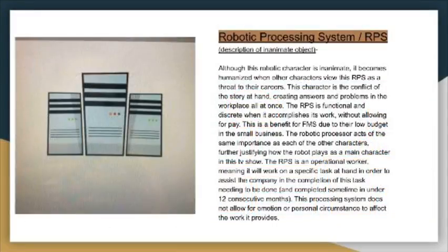Although the robotic processing system is inanimate, it becomes humanized when the other characters feel threatened by it. This character is the conflict of the story, creating answers and problems in the workplace all at once. The RPS is functional and discreet when it accomplishes its work without allowing for pay, and acts as the same importance as the other characters. The RPS does not allow for emotional or personal circumstance to affect the work it provides.